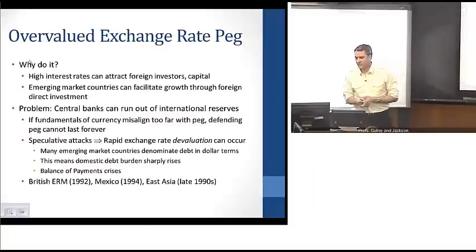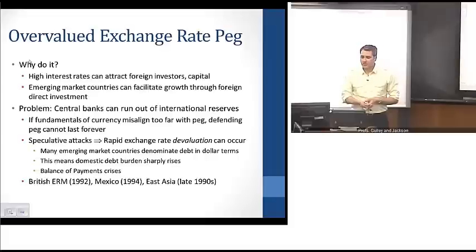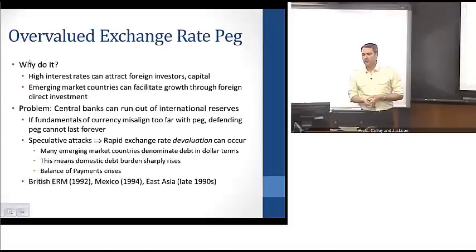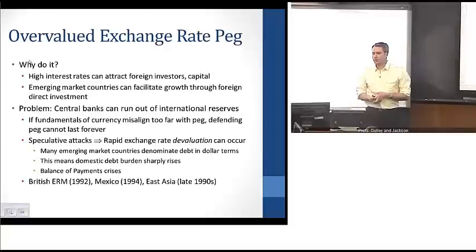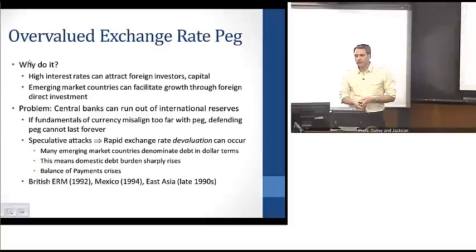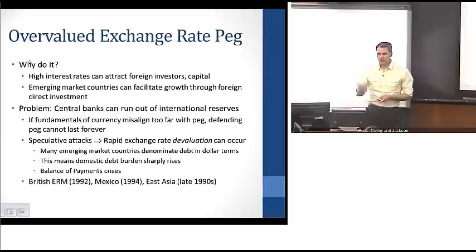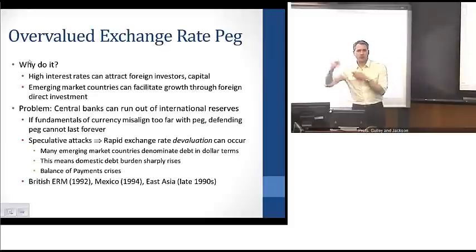Examples of speculative attacks include Britain's exchange rate mechanism crisis in 1992, Mexico in 1994, and many East Asian countries experiencing balance of payments crises and speculative attacks in the late 1990s. Sharp devaluations are visible in the data when central banks run out of reserves.